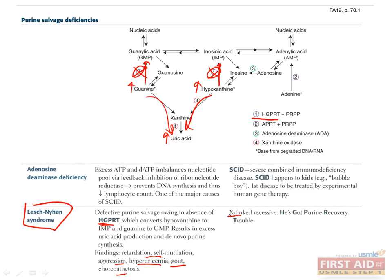HGPRT is on the X chromosome, so this is an X-linked recessive disease. And you can remember that this gene is involved in the purine salvage pathways if you use the mnemonic, he's got purine recovery trouble. How can you treat this? One commonly used drug is allopurinol, which inhibits xanthine oxidase here and here and will decrease the amount of uric acid in the blood.